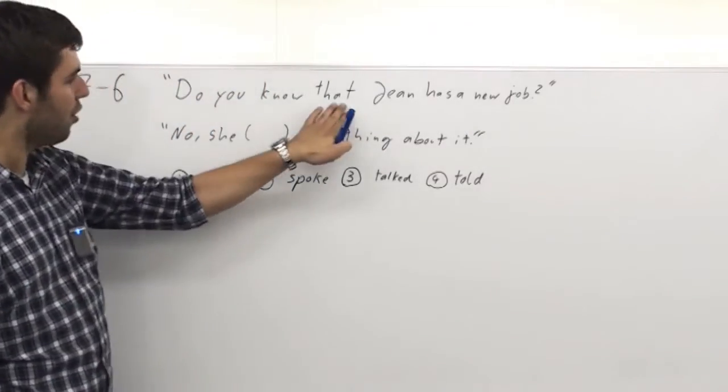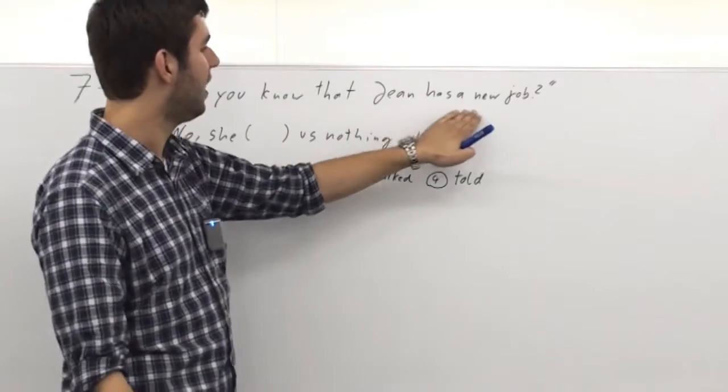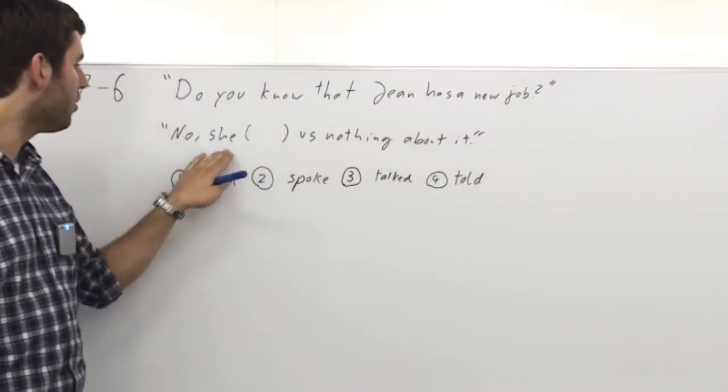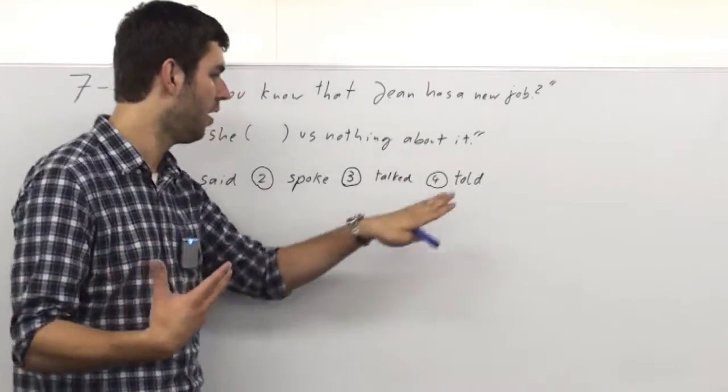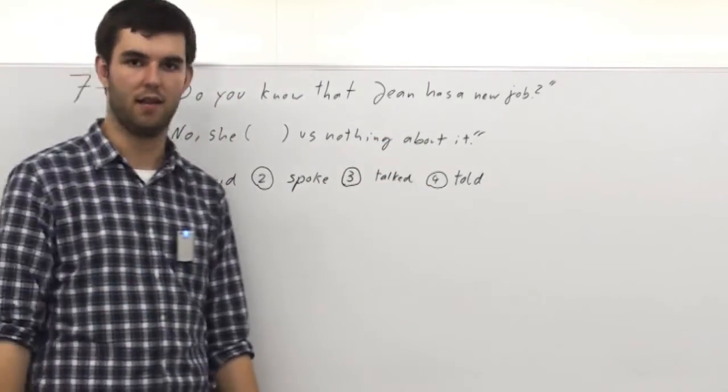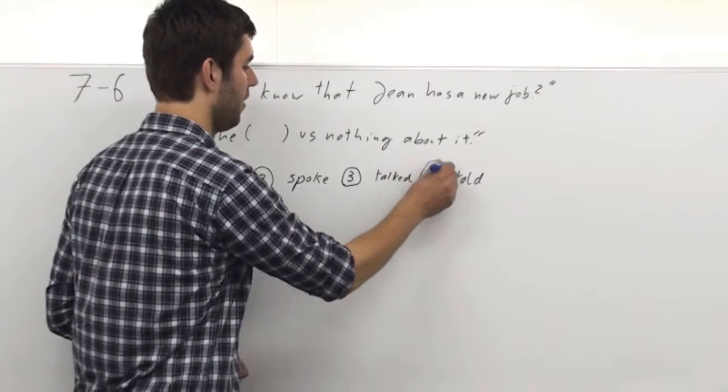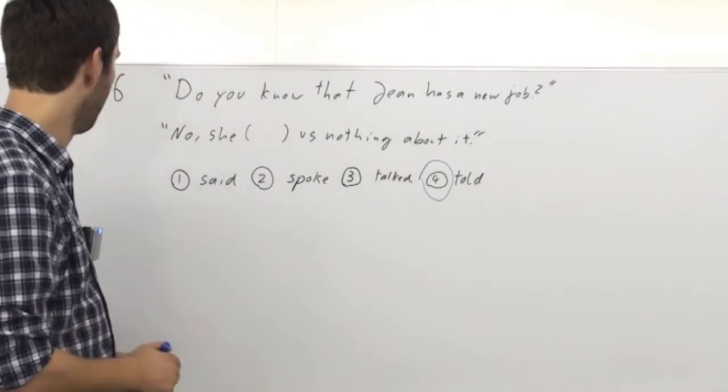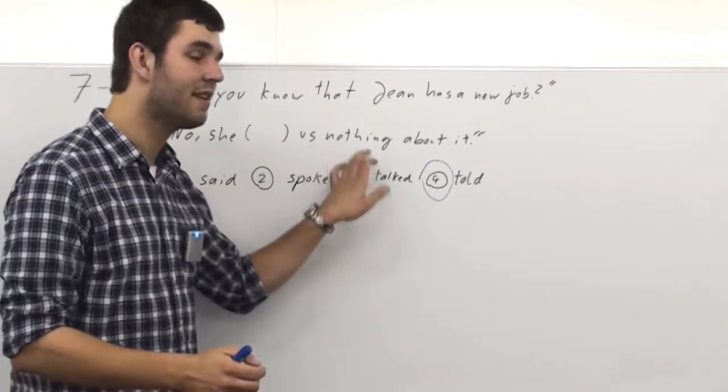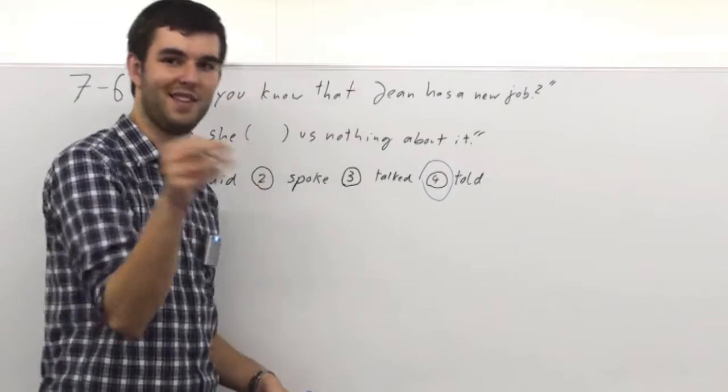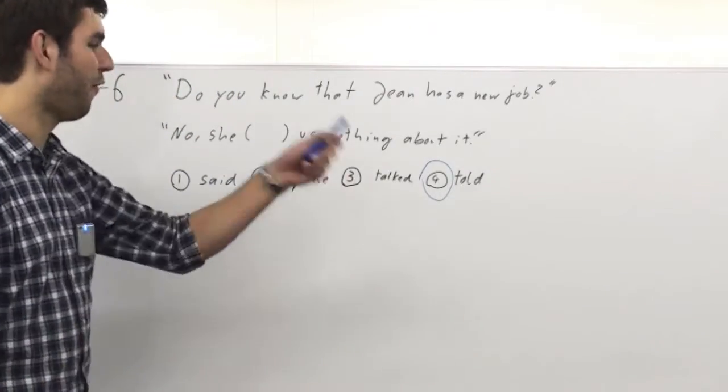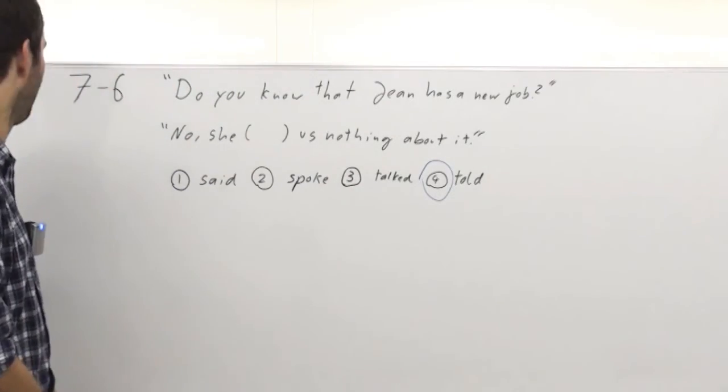And do you know that Jean has a new job. No. She nantoka asked nothing about it. Means she didn't give us the information. So we should use tell in this situation. In this case. Or told. The past form. So no. She told us nothing about it. Meaning she didn't give us the information. So no. 4 is the correct answer. Thank you.